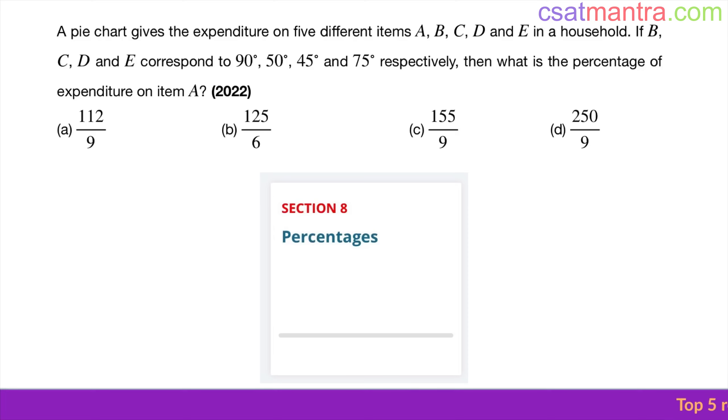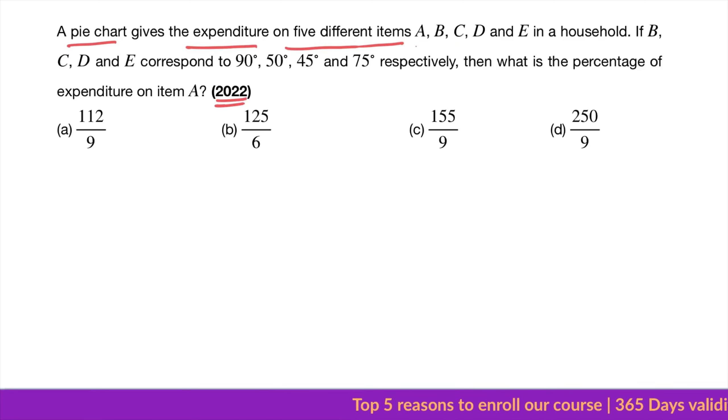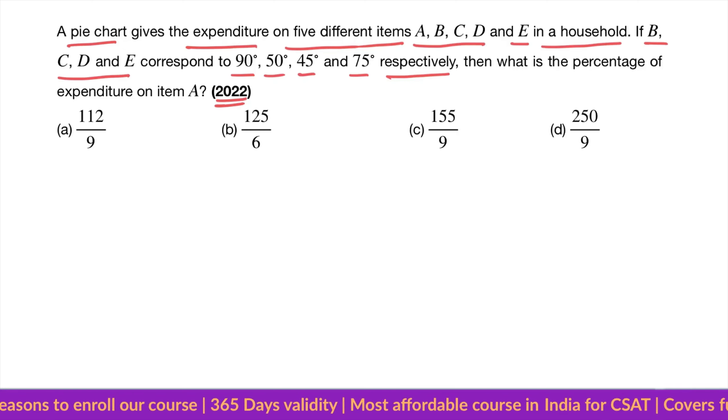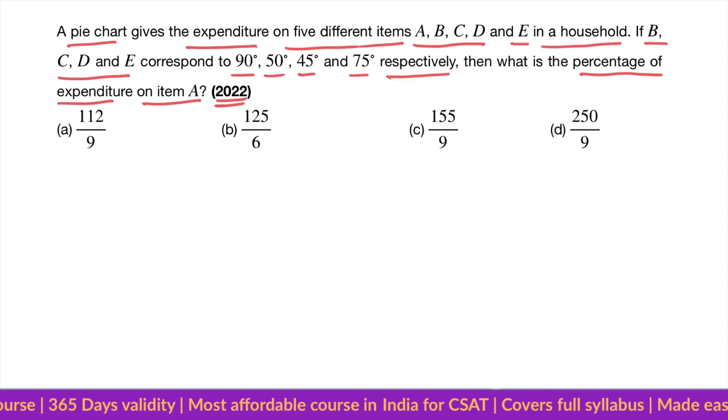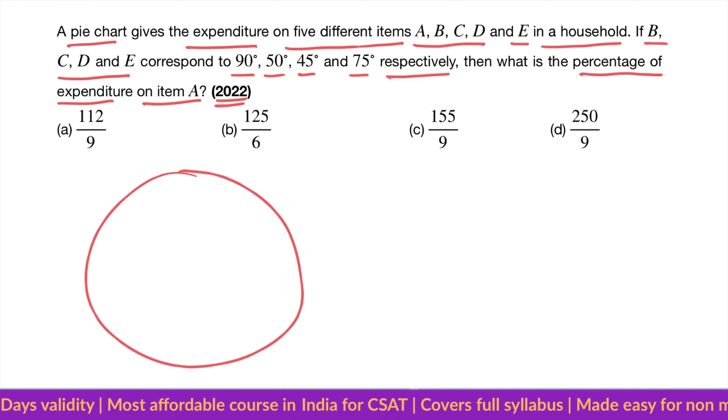This question is asked in 2022 based on percentages. A pie chart gives the expenditure on five different items A, B, C, D, and E in a household. If B, C, D, and E correspond to 90 degrees, 50 degrees, 45 degrees, and 75 degrees respectively, then what is the percentage of expenditure on item A? Pie chart means circle, my friends.